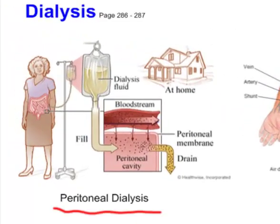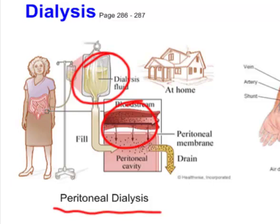Membrane technology is also used to treat kidney failure. One method is peritoneal dialysis: we add a dialysis fluid to the patient's abdomen, and that fluid collects toxins from the bloodstream. Using the concentration gradient, toxic molecules from the patient's blood diffuse into the peritoneal cavity, and we then drain them out.